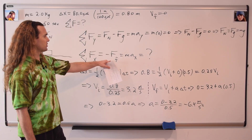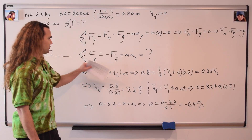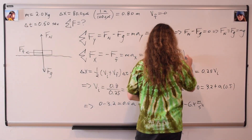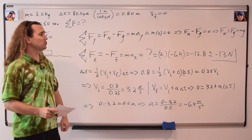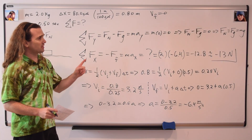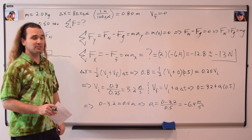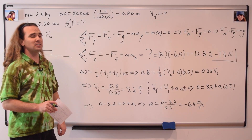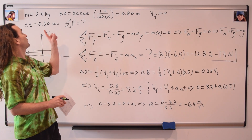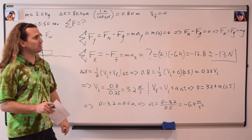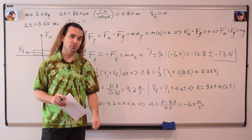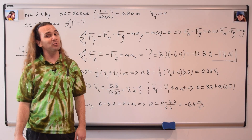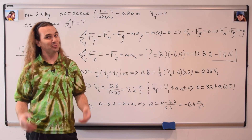Now we substitute into mass times acceleration to get the net force in the x direction. Mass is 2.0 kilograms, and the acceleration in the x direction is negative 6.4 meters per second squared, so that equals negative 12.8, or with two significant digits, negative 13 newtons. Thank you very much for learning with me today — I enjoyed learning with you.